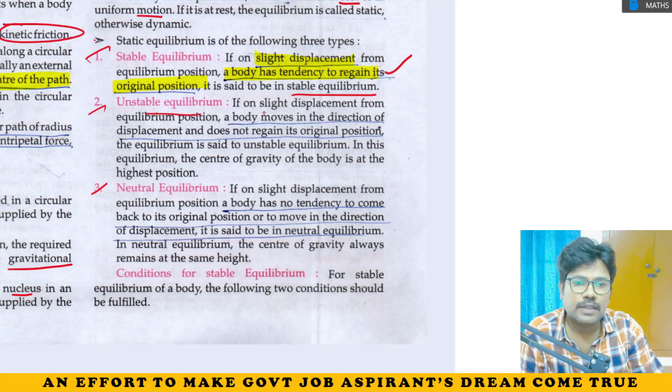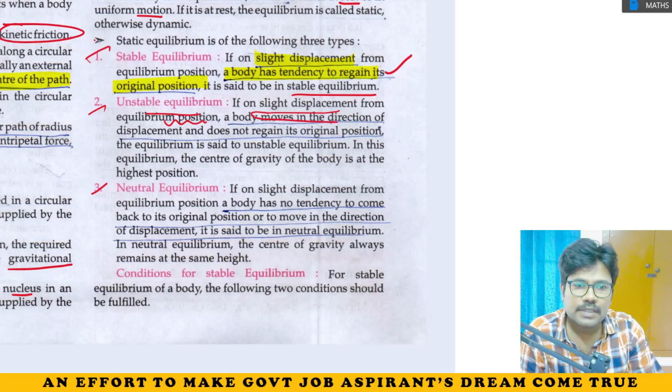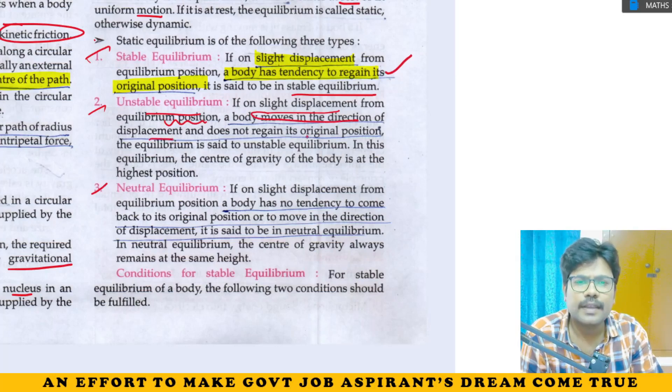Stable equilibrium: when a body is slightly displaced from its equilibrium position, it has the tendency to regain its original position. Unstable equilibrium: when a body is given a slight displacement from its equilibrium position, the body moves further in the direction of displacement and does not regain its original position. In unstable equilibrium, the center of gravity is at its highest position.